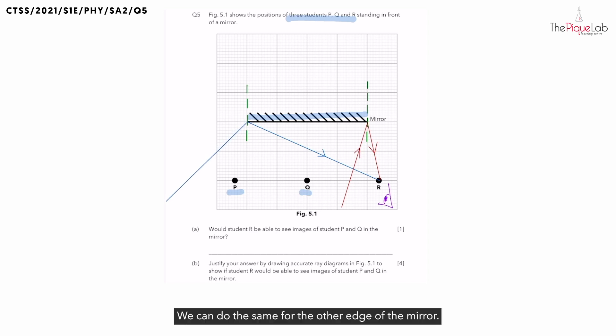We can do the same for the other edge of the mirror. Now what this gives us is the maximum field of view that can be observed by student R using this plane mirror. Does student P and Q fall within this field of view?